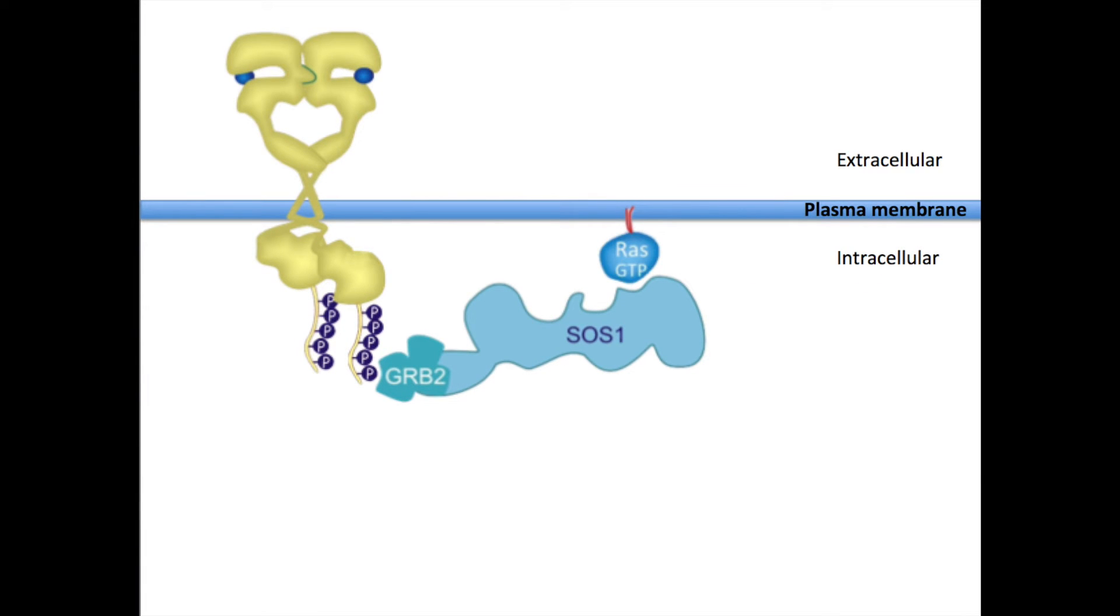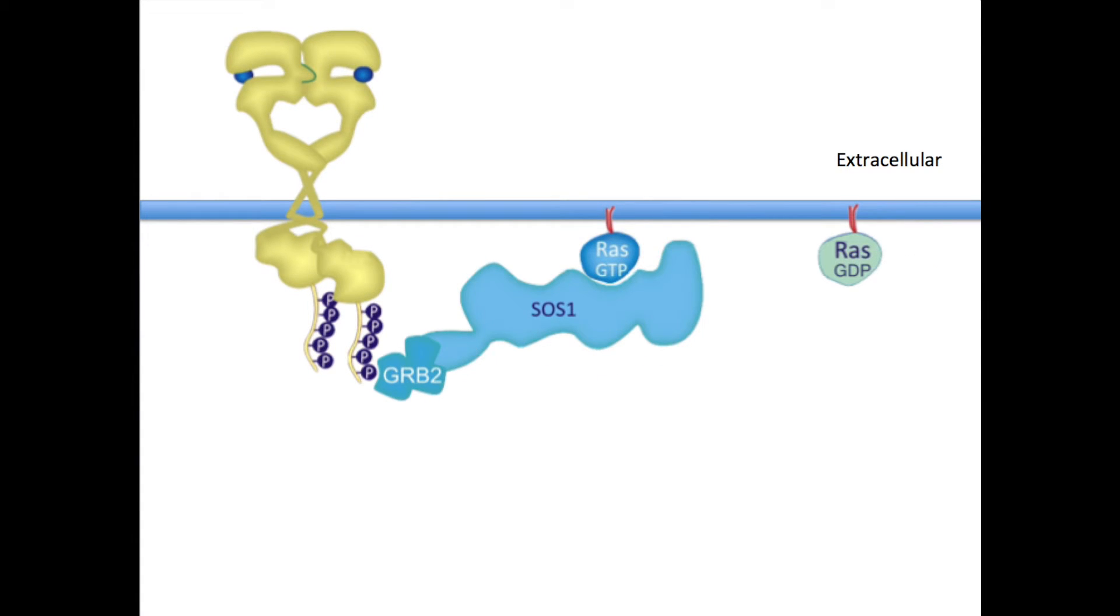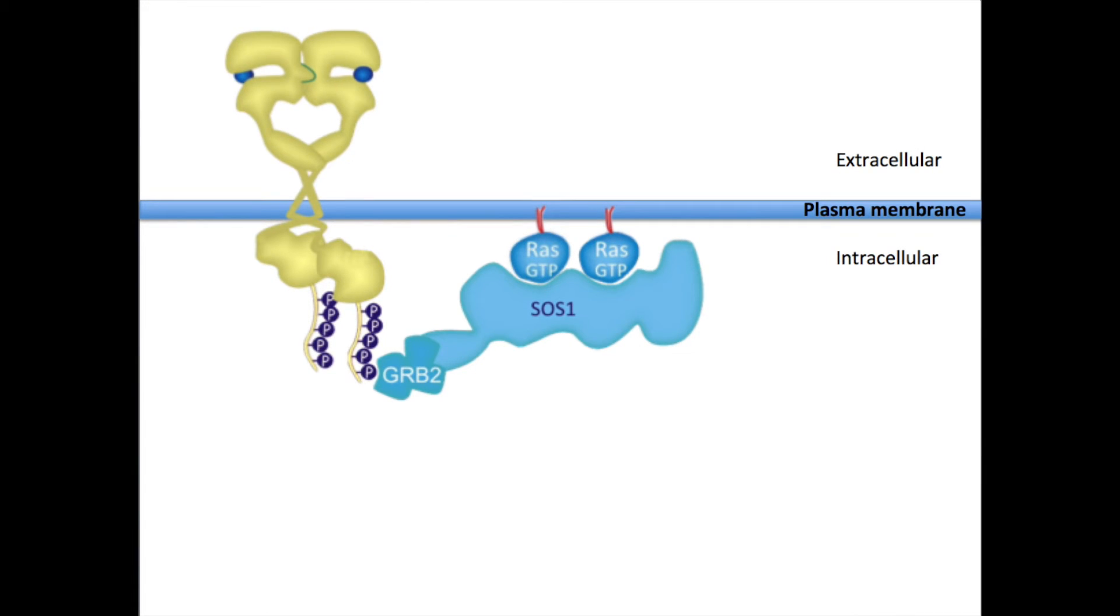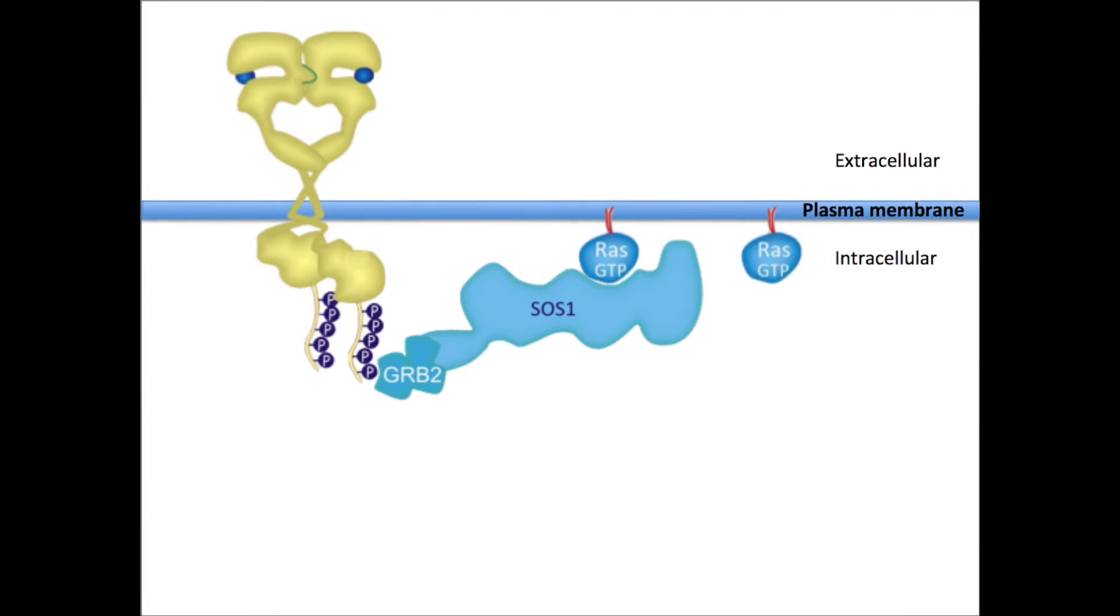The first RAS protein needs to be already activated, so SOS1 can undergo a conformational change. Now, SOS1 is able to bind an inactive RAS. After binding to this inactive RAS, SOS1 functions as a guanine exchange factor, a GEF. It removes the GDP bound to RAS, allowing RAS to bind GTP, which is far more abundant in the cell than GDP. When RAS is bound to GTP, it gets activated.